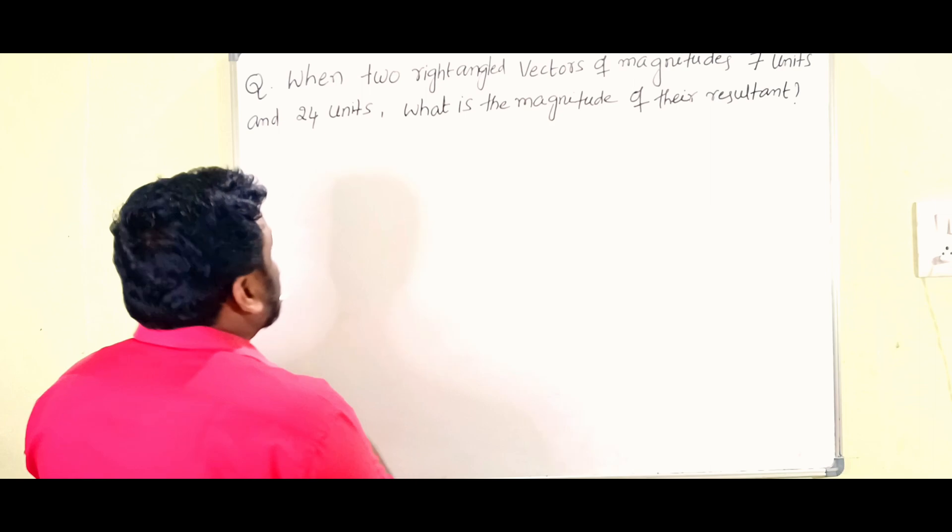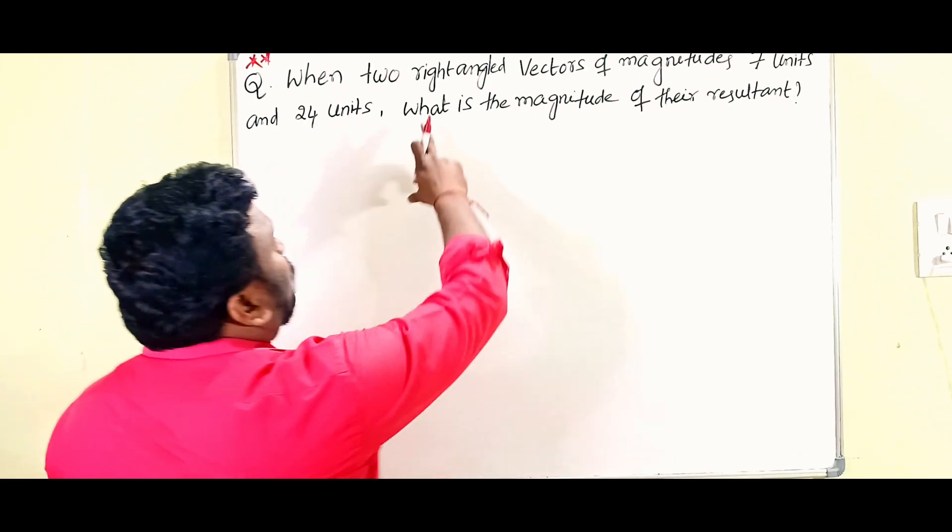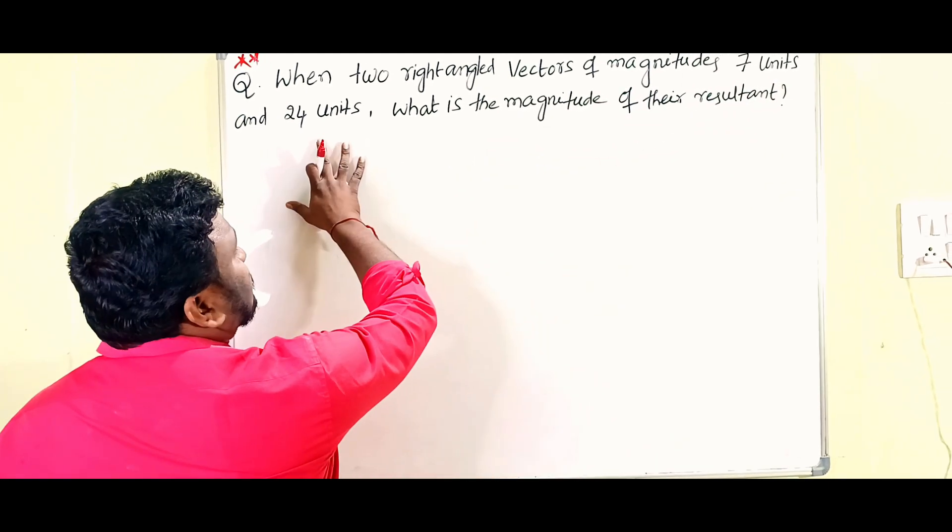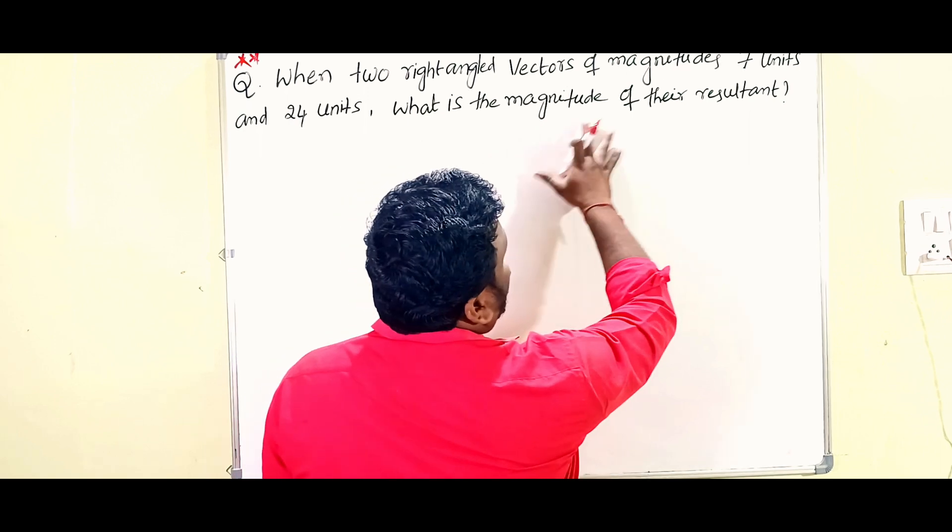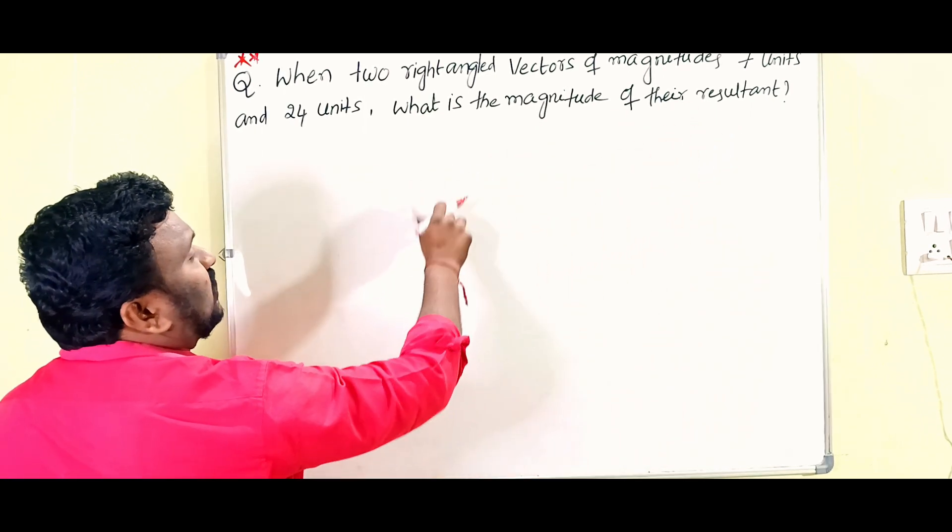The question should be like this: When two right-angled vectors of magnitude 7 units and 24 units, what is the magnitude of the resultant? So what is given: two vectors that are at right angles.